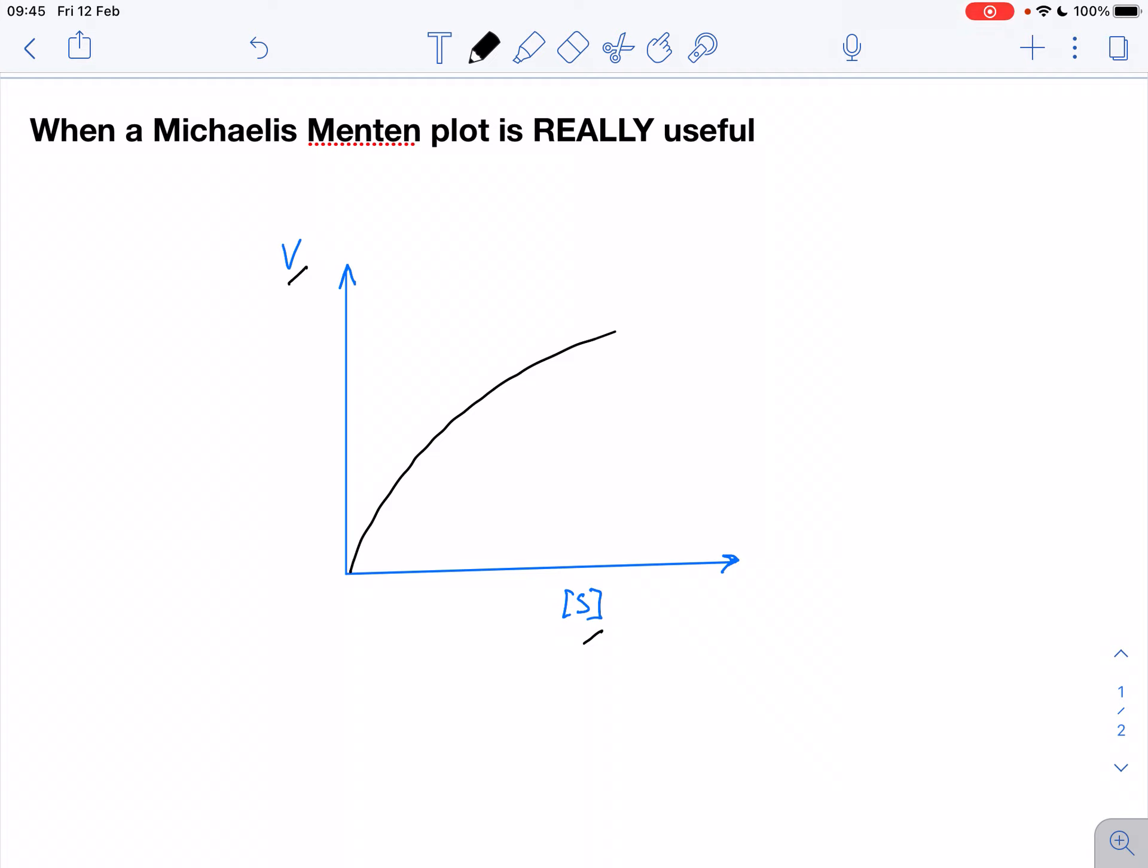So far so good, but the problem is that because it is a curve, we cannot get good values for Vmax or Km because we don't know where this curve actually plateaus off. So it could, for example, go like that, and we could make a guesstimate about Vmax which may be somewhere there. So that would be perhaps our Vmax here. But we don't know, and therefore Michaelis-Menten plot is not very useful.